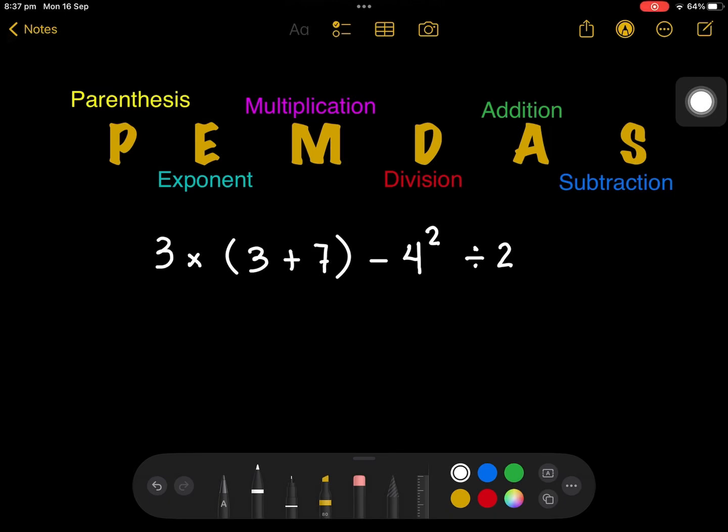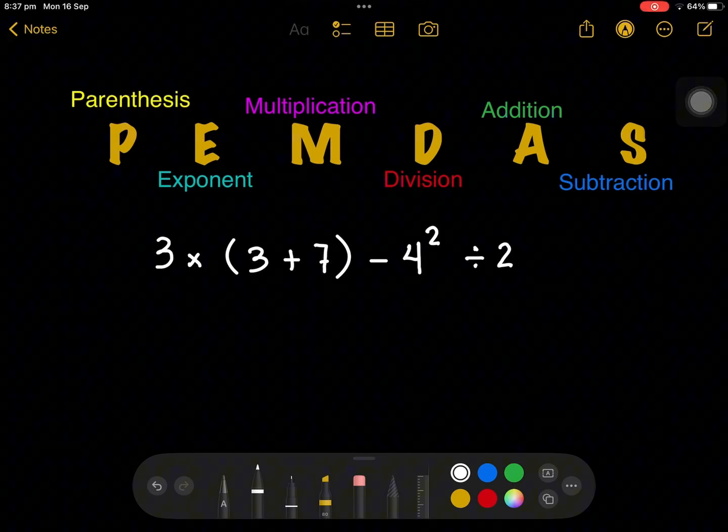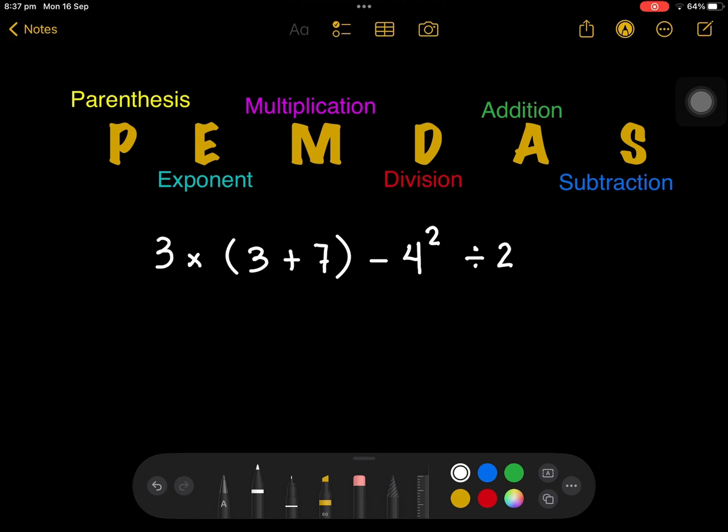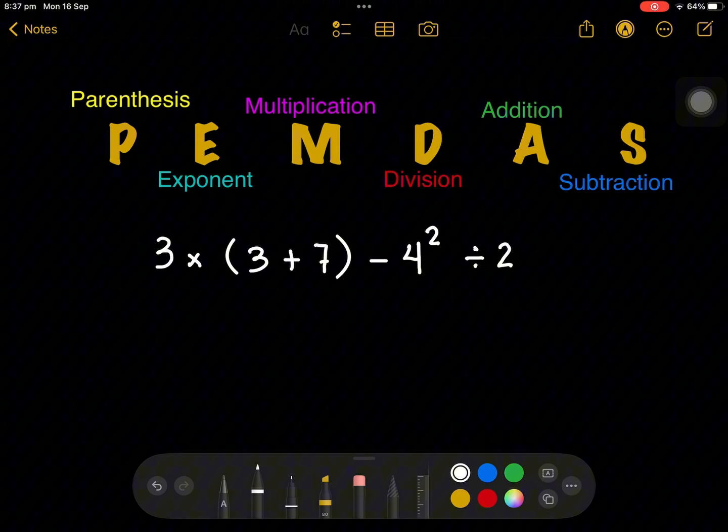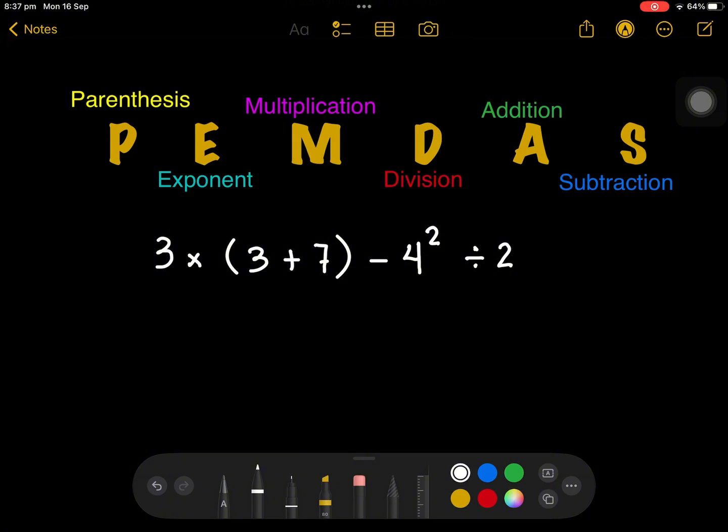So here is another acronym for the order of operations, which is known as PEMDAS. P for parenthesis, E for exponent, M for multiplication, D for division, A for addition, and S for subtraction.